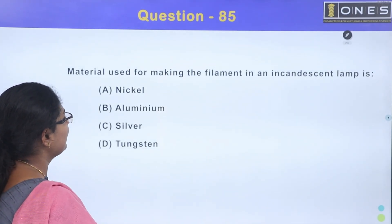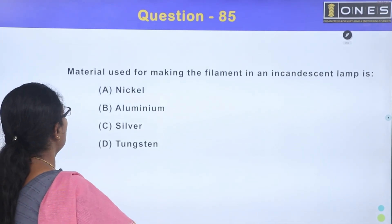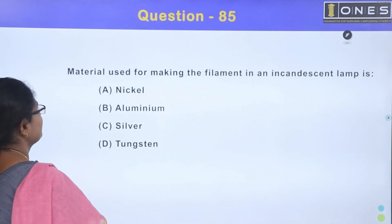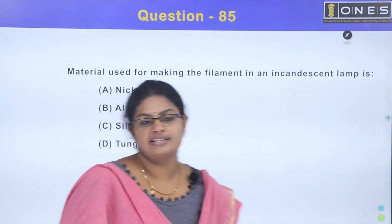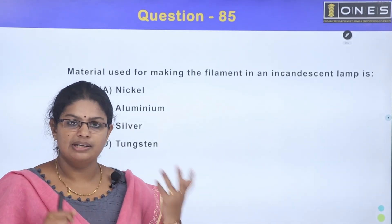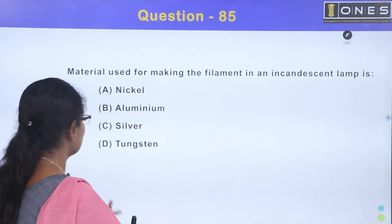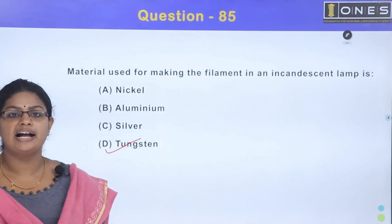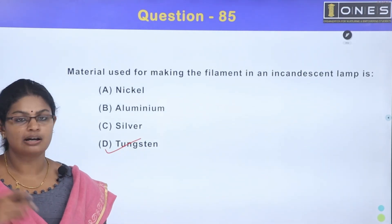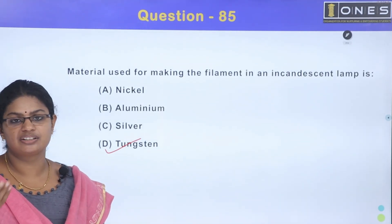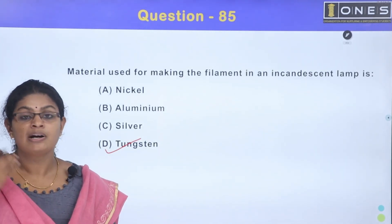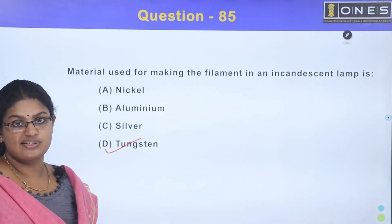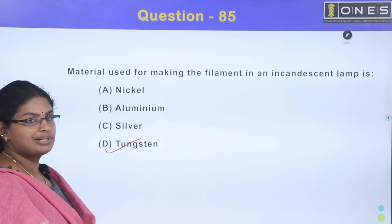Material used for making the filament in an incandescent lamp: Option A, nickel; Option B, aluminum; Option C, silver; Option D, tungsten. Tungsten is used because it has a high melting point and high resistance. The answer is Option D, tungsten.